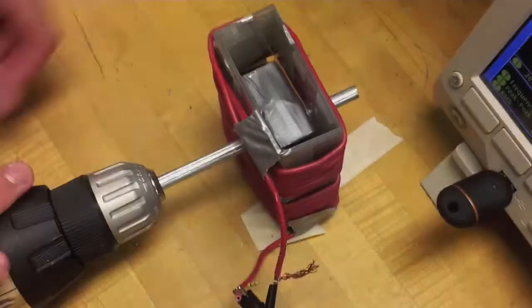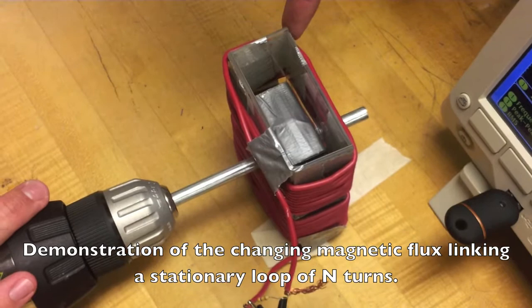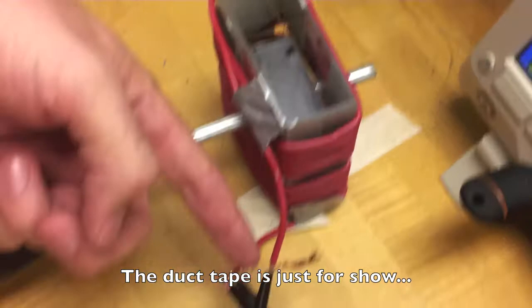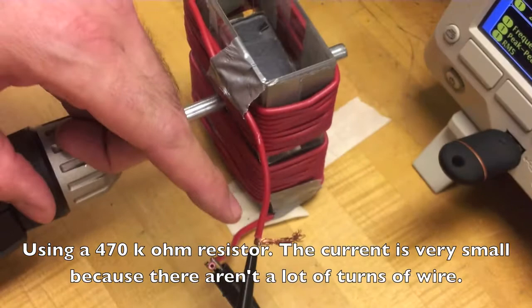What we have here is our generator. This is just a rotating flux inside of a bunch of turns of wire. And I've got a little resistor attached to it because it's going to be a very small current coming out of here. And as we all know, I times R equals V.